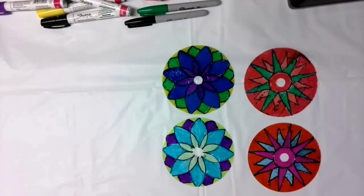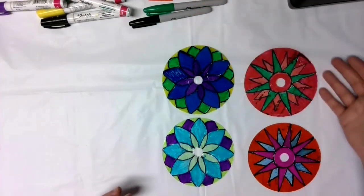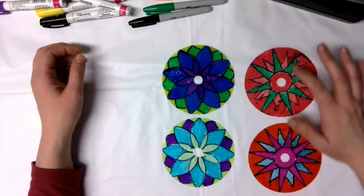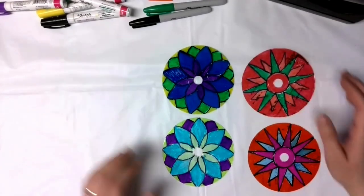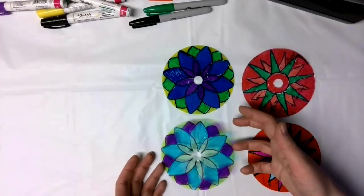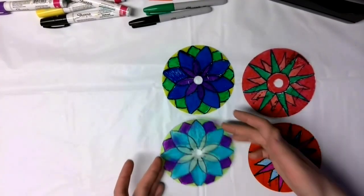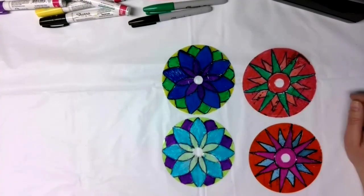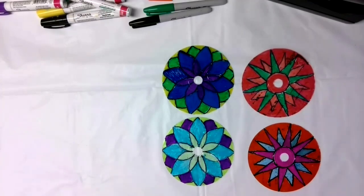There is our CD Suncatcher Art. It is a really simple craft using pretty much just CDs, a pattern, and markers, and of course, you know, tape to remove the backing on the CD. But it's a quick and simple and nice craft. So I hope that you enjoyed it and it inspires you to make your own crafts. So I hope that you enjoyed our CD Suncatcher Art craft. And I hope that you all have a great rest of your day. Bye everyone.